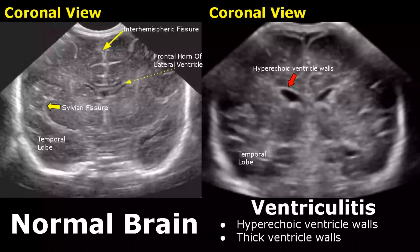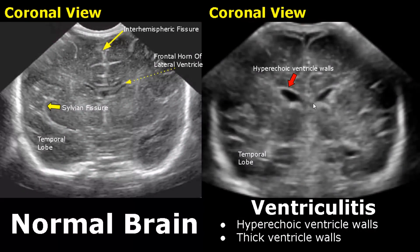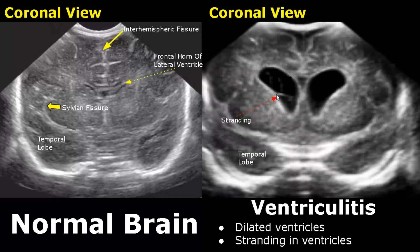Ventriculitis is the inflammation of ventricles. The wall of the ventricle will be thickened and appear hyperechoic. Another feature is stranding of wall tissue in the ventricles, and the ventricles are much more dilated in this image.